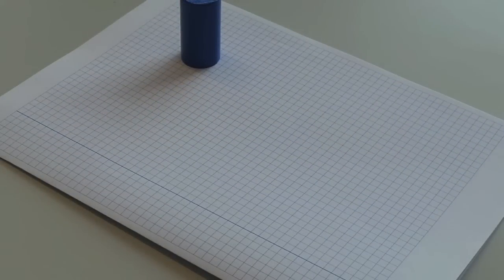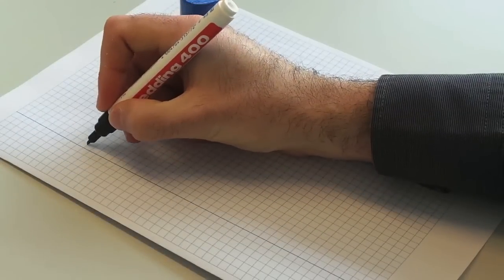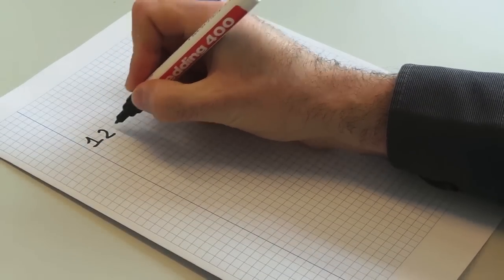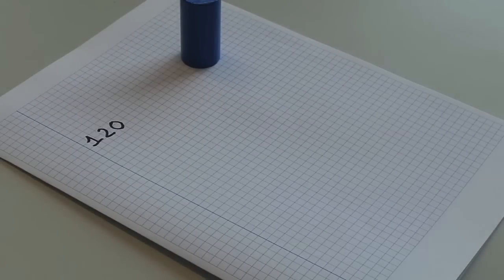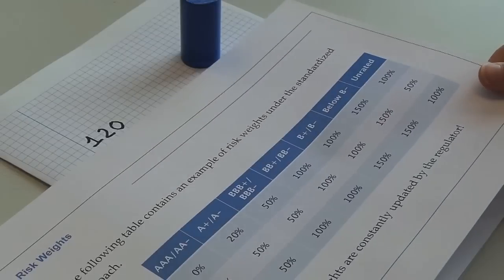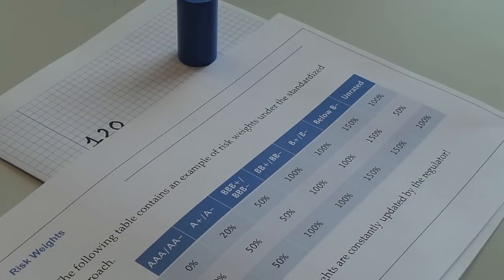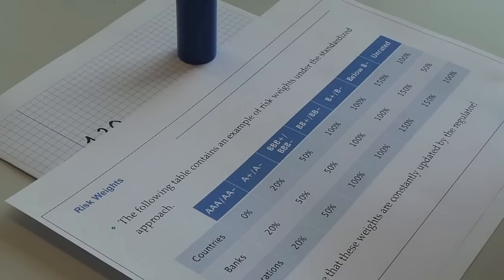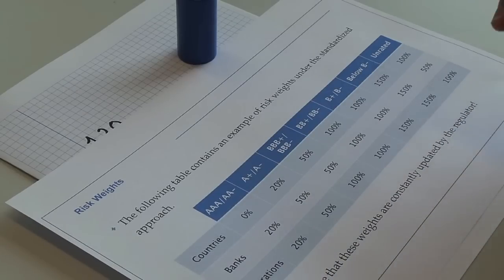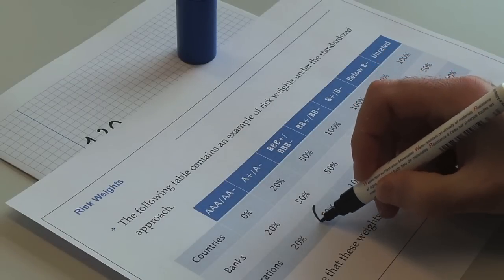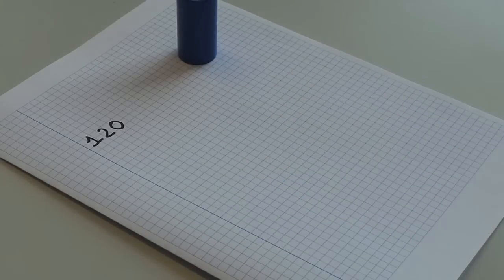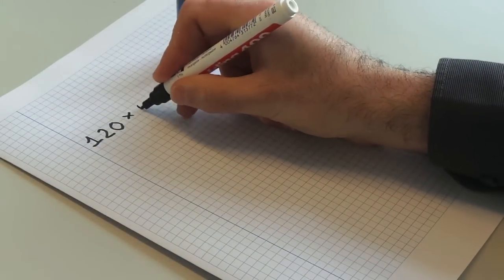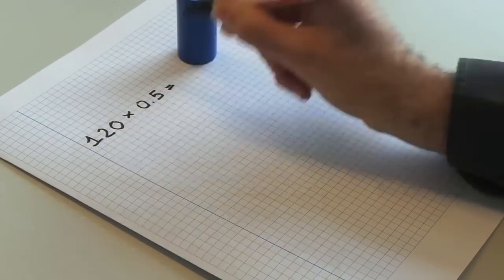Okay, we start from the loans to A-rated corporations. The principal amount is 120 million euros; we just write 120. What is the risk weight? Going back to the previous table, we discover that the risk weight for A-rated corporations is 50 percent or 0.5 in decimals. Hence, we multiply 120 by 0.5 and we get 60 million euros.